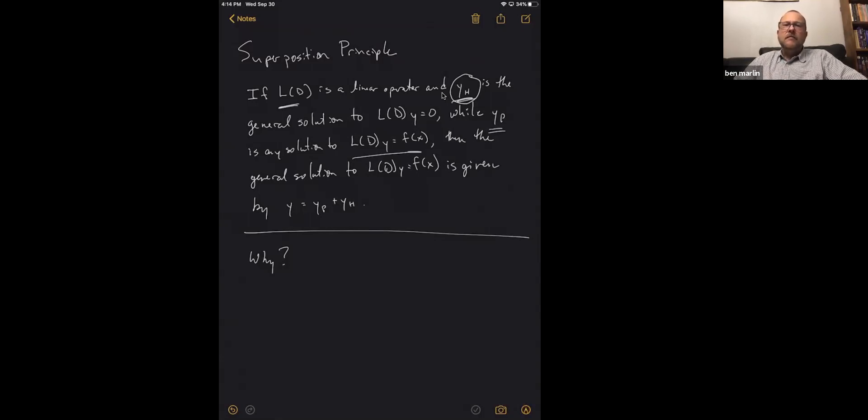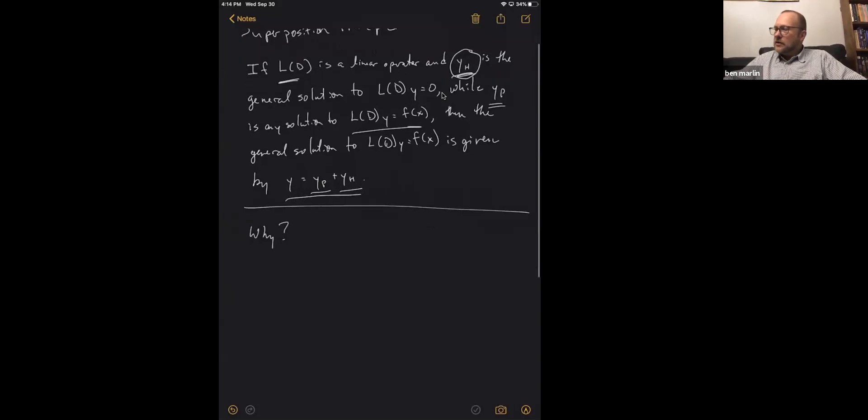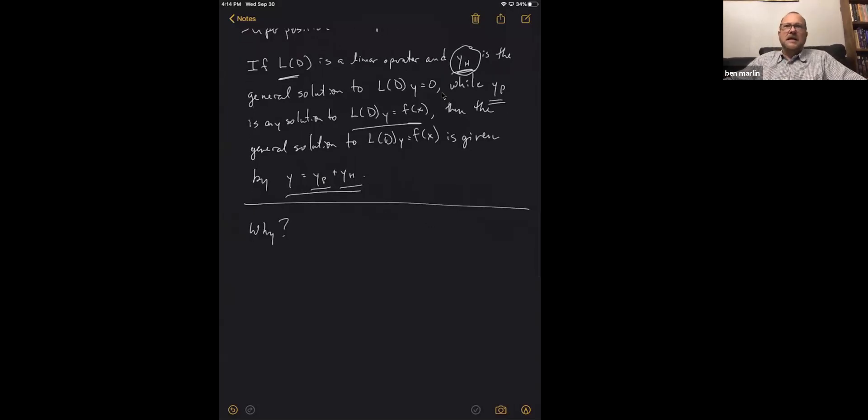Then knowing the y sub h is going to tell you the entire set of all possible solutions, because the general solution for the non-homogeneous will simply be that particular solution plus the general solution that will have the coefficients, a e to the t and b e to the minus t, or whatever it happens to be. So a really good question that you might have here is, why? Why will that turn out to work?